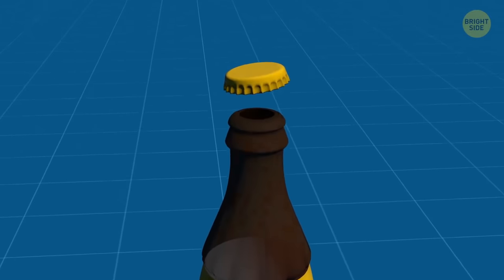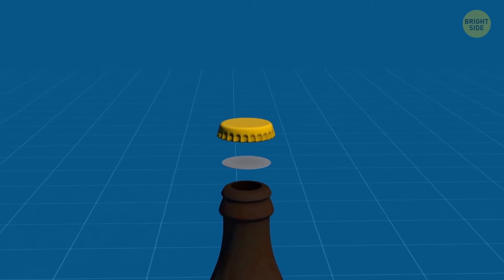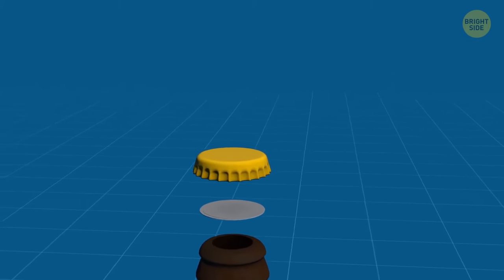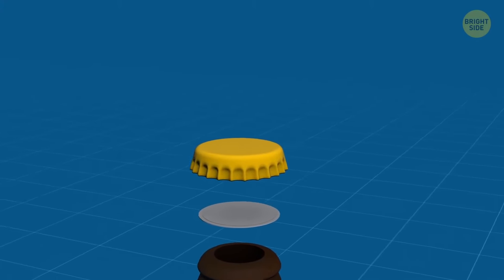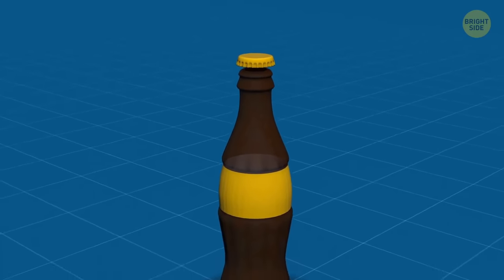A tiny plastic disc under a bottle lid is what makes soda sparkling. While the lid keeps the liquid inside, this plastic disc holds the gases inside. Without it, it would just be sweet water.